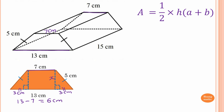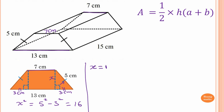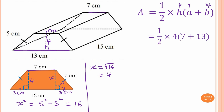To find x, we use Pythagoras' theorem. The hypotenuse is 5, the longest side. X squared equals 5 squared minus 3 squared, which gives 16. So x equals the square root of 16, which equals 4. The perpendicular height is 4. Now substituting into the trapezium formula: H is 4, A is 7, and B is 13. So a half of 4 times (7 plus 13), which gives 40 square centimeters.